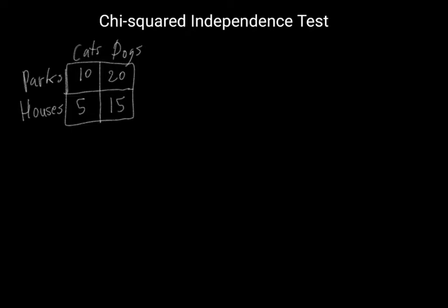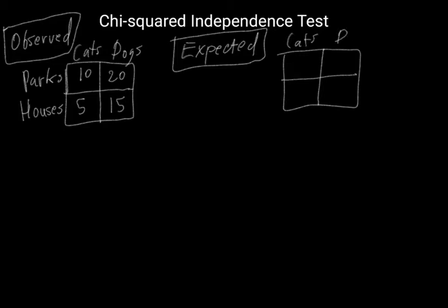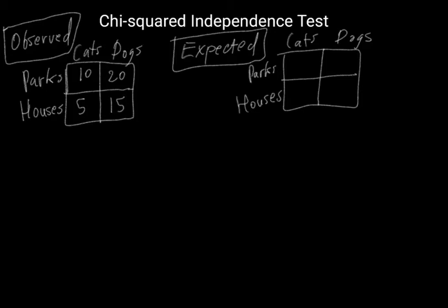This table is known as the table of observed counts. The first step in computing the chi-squared independence test is calculating the table of expected counts. The table of expected counts would be filled with the counts we would expect to see by chance, purely by chance alone. The table of expected counts is computed by first computing the total number of data points n, which is just adding all of the points together. So, we have 10 plus 20 plus 5 plus 15, which is equal to 50.